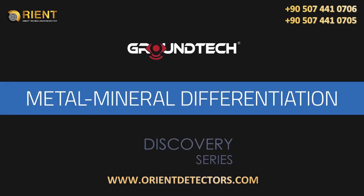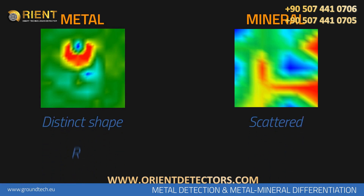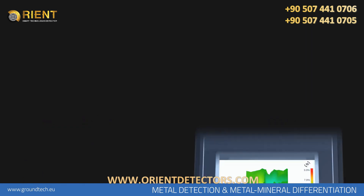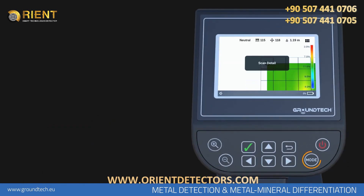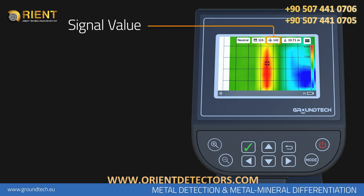For metal detection and metal-mineral differentiation: metallic objects have a distinct shape, while minerals usually have a messy and scattered appearance. Metallic objects appear in red, while mineral substances are usually yellow and orange. The most important property distinguishing metallic objects from minerals is that there is a significant numerical difference between them and the soil in the collected data. To see these numerical values, switch to the scanning details feature in the 3D Viewer function. There must be an increase of at least 15 units between the soil, shown in green, and metallic objects, shown in red.